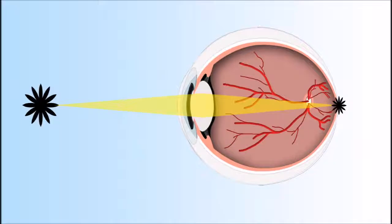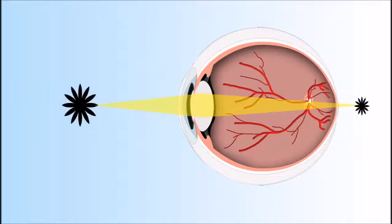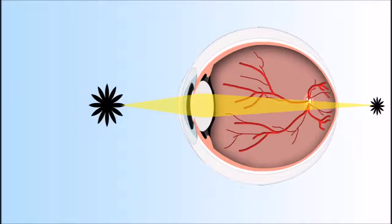In a presbyopic patient, the lens lacks the flexibility to refocus the image on the retina. This causes the image to focus further and further behind the retina as objects move closer to the observer. The presbyopic patient sees blurry up close because the image on the retina is blurry and out of focus.